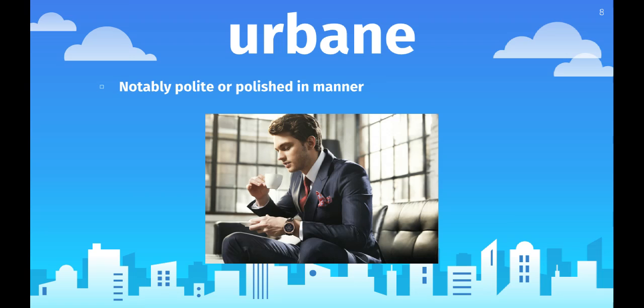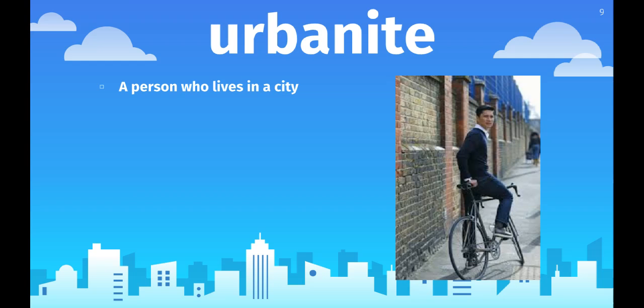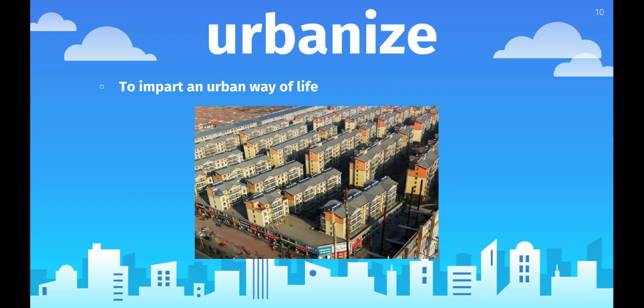The next word is urbanite — this is a person who lives in a city. A suburbanite is someone who lives in a town or outside of the city, and an urbanite is someone who lives in the city.